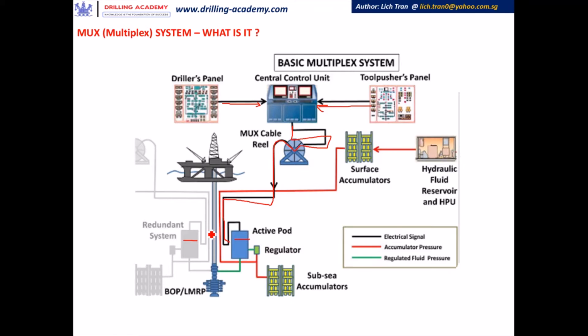The solenoid valve moves and directs the 3,000 psi pilot fluid through to the corresponding SPM for the desired BOP function. The opposite BOP function SPM pilot line is vented to the accumulator bank. The pilot circuit is a closed-loop circuit, but the difference is it all happens within the subsea pod. The pilot fluid is provided from the subsea pilot accumulator stored within the pods — both in the inactive pod and in the active pod. This is another difference from the indirect hydraulic system, where the pilot bottles are stored at surface.